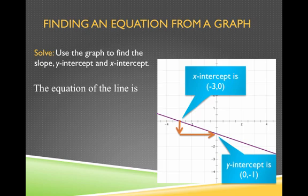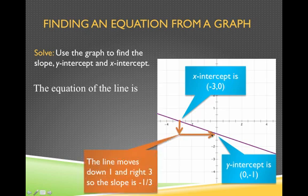So you can use these two points and calculate the slope algebraically using the numbers. Or we can just see how we're moving here. So I can see that I'm going down 1 and right 3. Down 1, right 3 gives me a slope of negative 1/3.